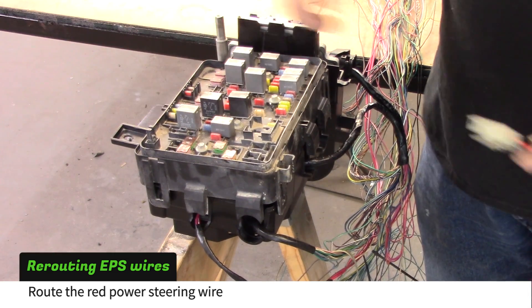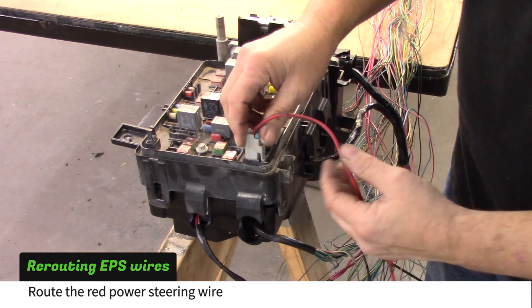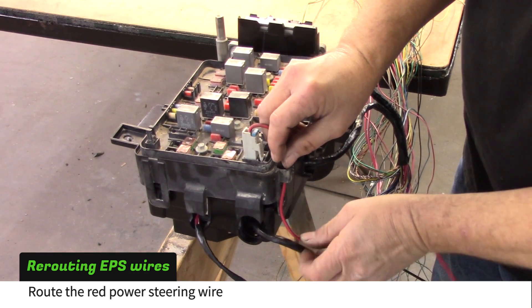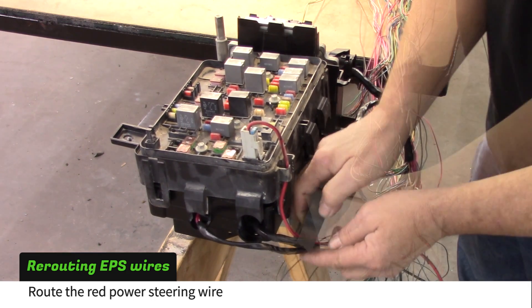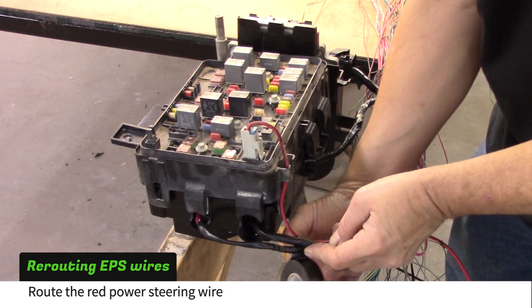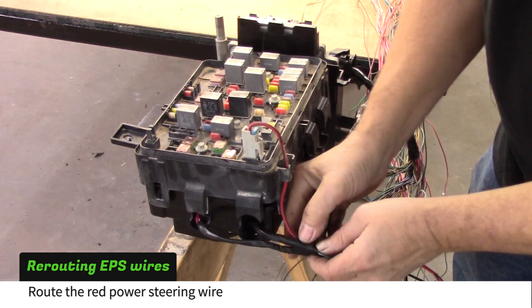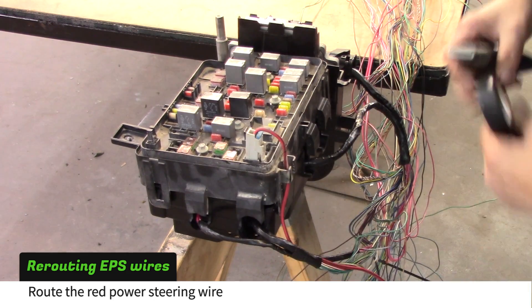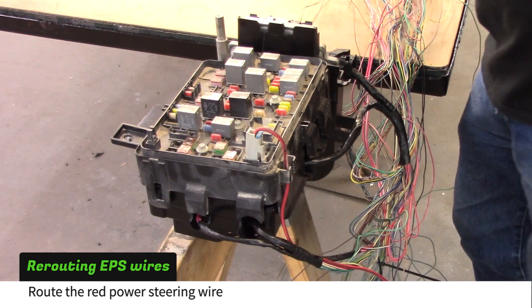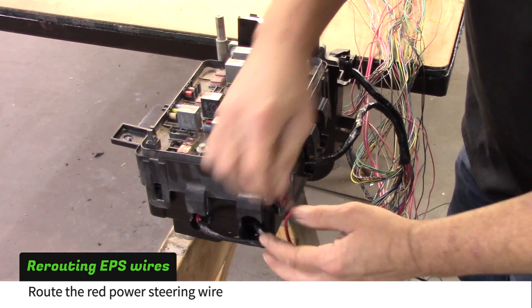Lay the fuse block on top of the housing. Route the red power steering wire and the two fuse block multi-plug harnesses beside each other and tape as shown. Remove the fuse block.